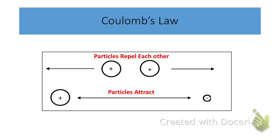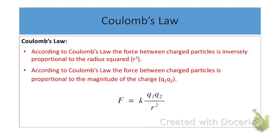Here we have a diagram of charged particles. Some charged particles are repelling each other because they have the same charge, such as two positively charged particles like protons — we use arrow notation showing them pointing away from each other. We also have charged particles that are attracted to each other, such as a negative electron and a positive proton, with arrow notation showing the attraction between these two charged particles.